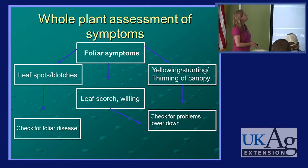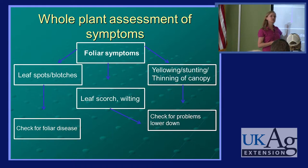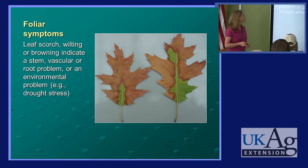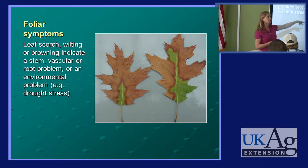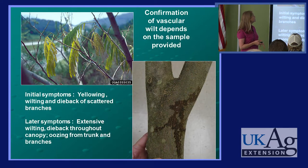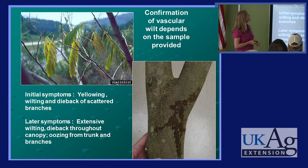Back to our whole plant assessment. We've talked about foliar symptoms leading us to look for infectious diseases. What if we see other types of symptoms — leaf scorching, wilting, yellowing, thinning of the canopy — other symptoms besides those discrete blotches and spots? Then we're going to focus on problems lower down. These tend to be the more common problems, certainly in landscapes, and maybe a little bit more difficult to diagnose. If we see leaf scorching or burning around the edges, we're going to look for a problem that has to do with water uptake and movement rather than a fungus attacking the leaf directly.